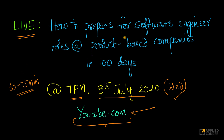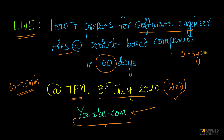The topic of discussion is how to prepare for software engineer roles at product-based companies in 100 days. We will focus mostly on freshers and people with 0 to 3 years of experience. This is the target audience for whom we will create this session, and this will mostly be Software Development Engineer 1 level roles.